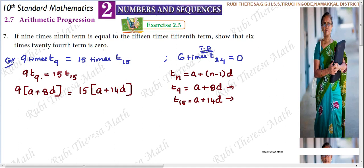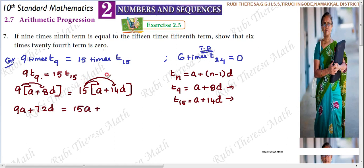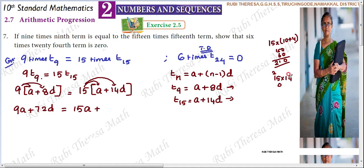After substituting, we multiply inside. 9 should be multiplied with both terms: 9 into a is 9a, and 9 into 8 is 72, so we get 9a plus 72d. On the right side, 15 should also be multiplied with both terms: 15 into a is 15a. Now for 15 into 14, we can split 14 as 10 plus 4.